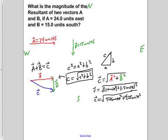Now if we add those two values together, C equals the square root of 801 units squared. Then if we take the square root of that, we would find that the resultant magnitude of C is roughly 28.3 units.